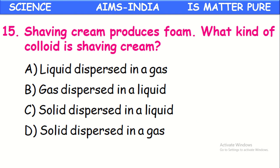Shaving cream produces foam — what kind of colloid is shaving cream? Shaving cream is a gas dispersed in liquid colloid. Shaving cream is formed because of the dispersion of gas in liquid; it is called a gas-dispersed-in-liquid colloid.